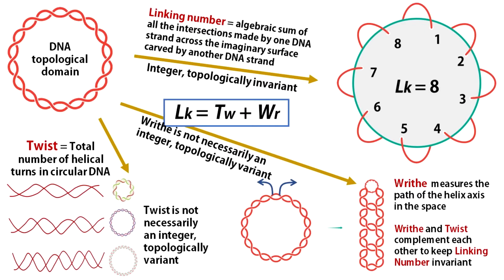and writhe. Linking number represents the algebraic sum of all the intersections made by one DNA strand across the imaginary surface defined by another DNA strand. This parameter is always an integer and is topologically invariant. Topologically invariant means for a given topological domain, linking number is always fixed. It cannot be changed without breaking at least one DNA chain.